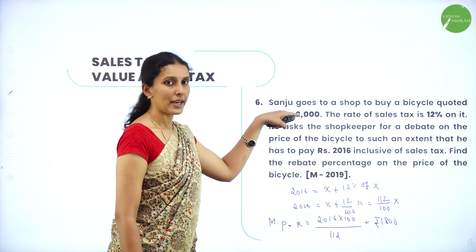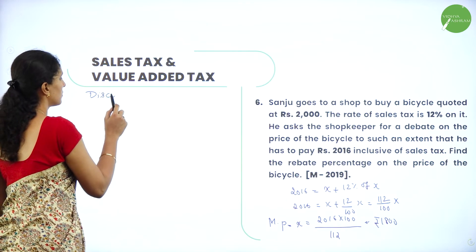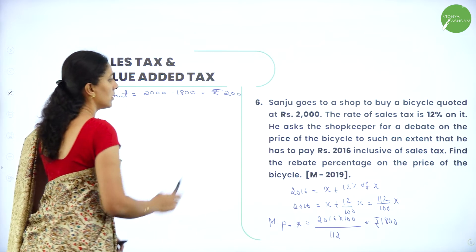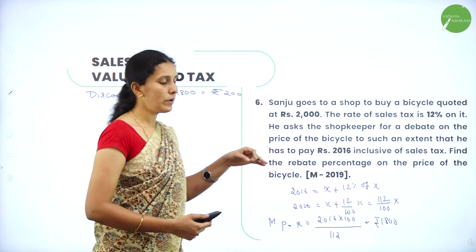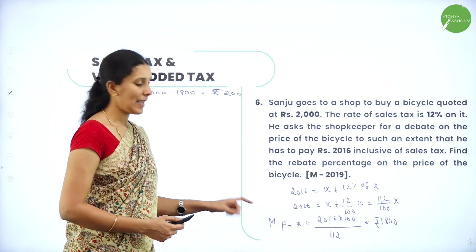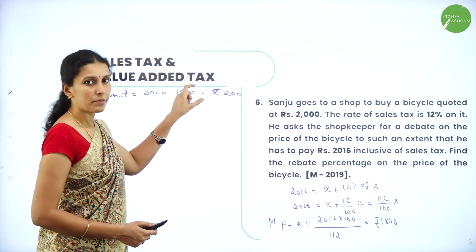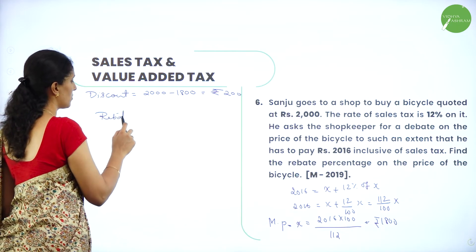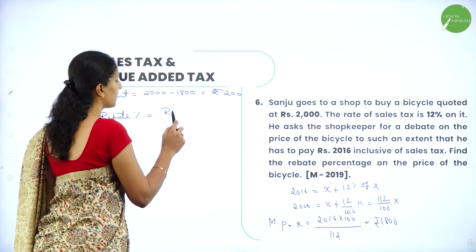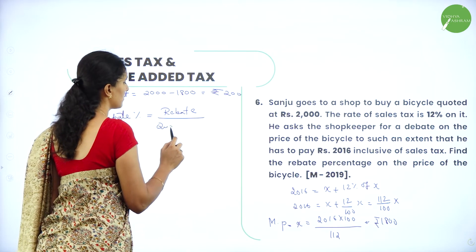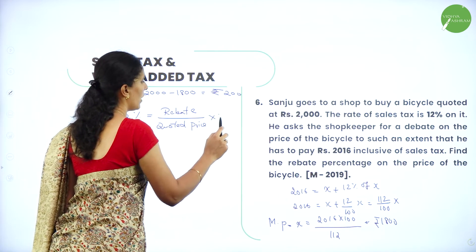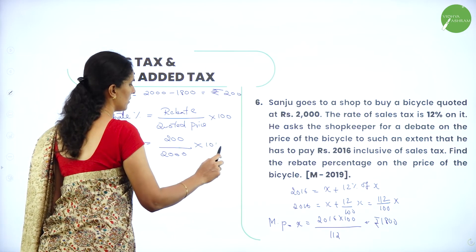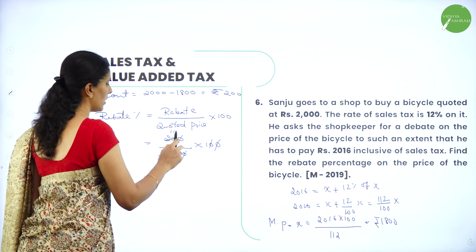The actual quoted price was 2,000. So the discount is 2,000 minus 1,800, which equals rupees 200. The new market price is 1,800 and the discount given is rupees 200. Rebate percentage equals rebate divided by the quoted price into 100. That is 200 divided by 2,000 into 100, and after cancellation we get 10 percent.